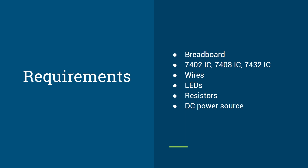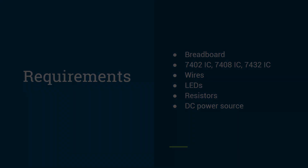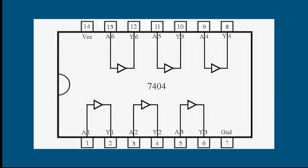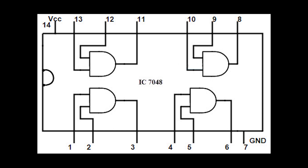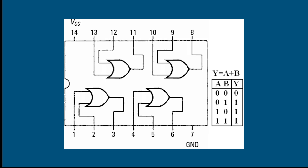The requirements for implementing the circuit are: a breadboard, three ICs — 7404, 7408, and 7432 — some wires, LEDs, resistors, and a DC power source. This is the pin diagram of the 7404 IC, which is the NOT gate IC, followed by the pin diagram of the 7408 IC, which is the AND gate IC, and the 7432 IC, which is the OR gate IC.